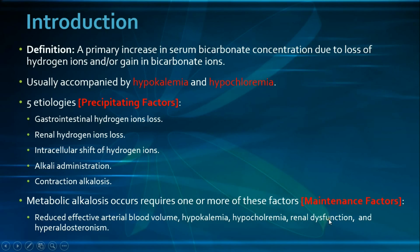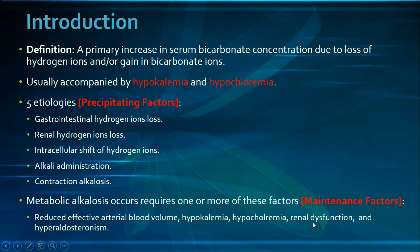Regarding renal dysfunction as a maintenance factor: renal dysfunction does not cause metabolic alkalosis but rather maintains it, since in renal failure you lose the capacity to excrete excess bicarbonate ions due to decreased GFR. If isolated renal failure occurs without a preceding precipitating factor for metabolic alkalosis, the result would be metabolic acidosis.